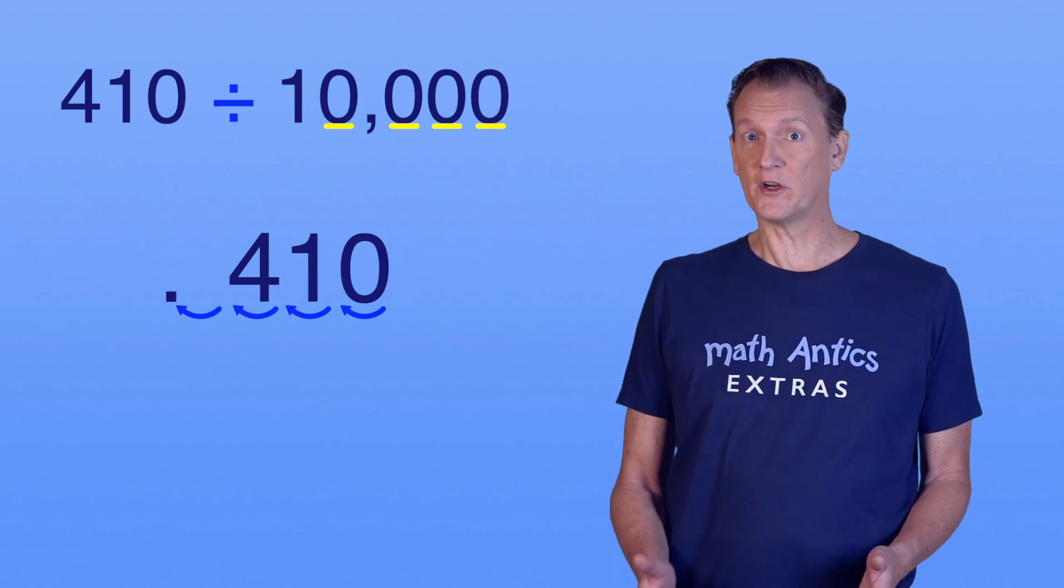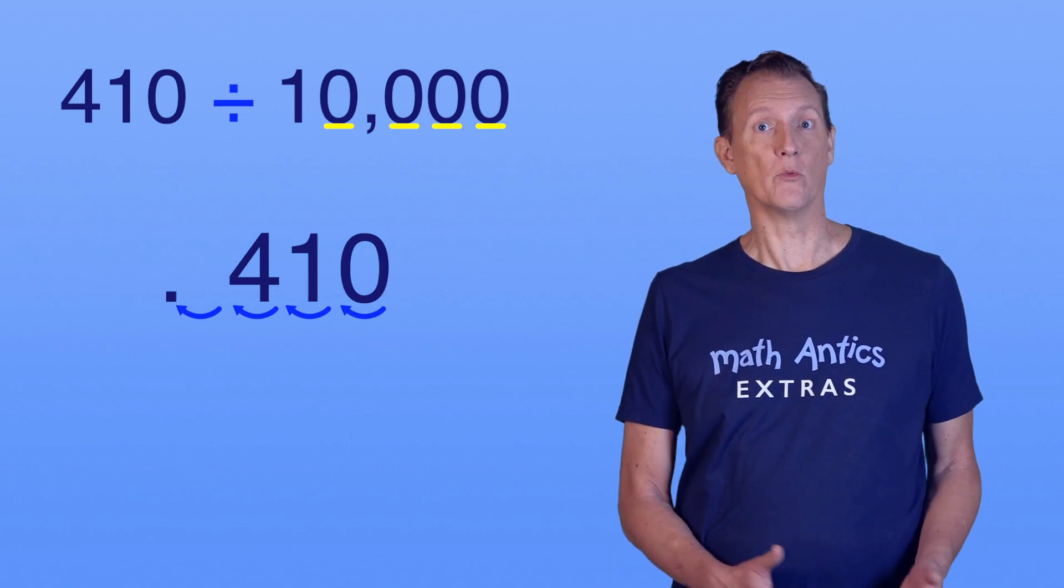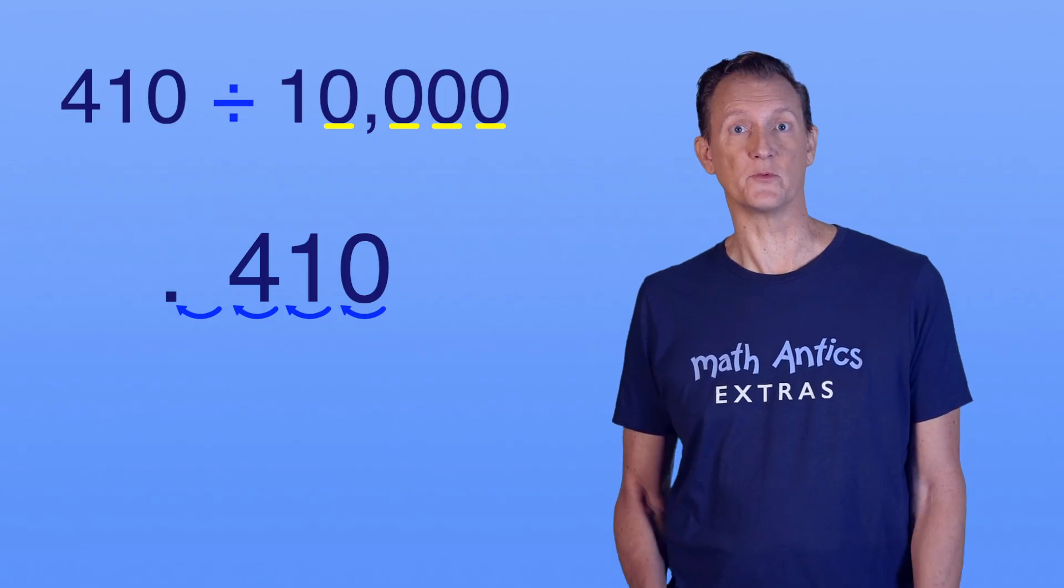Once again, we shift out our decimal point past our digits, and once again, we fill in the empty spaces with zeros.